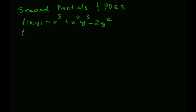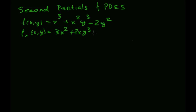The first partial derivatives are: with respect to x, that's going to give me 3x squared plus 2xy cubed. And the other partial with respect to y is going to be 3x squared y squared minus 4y.